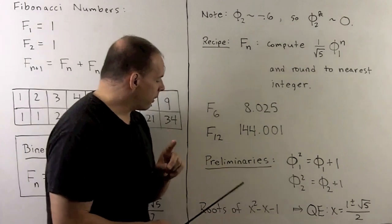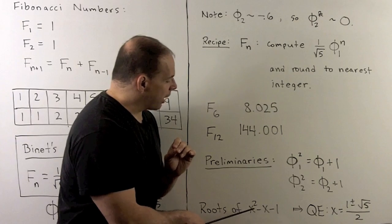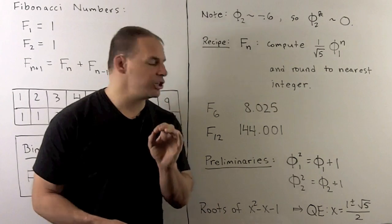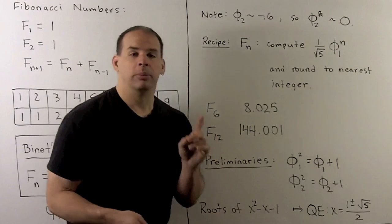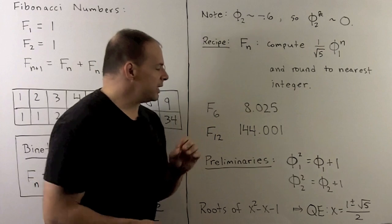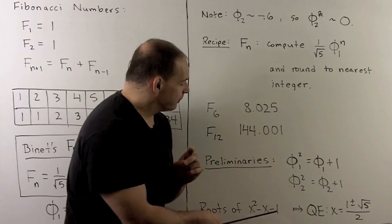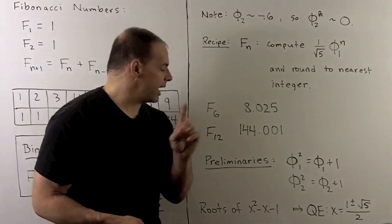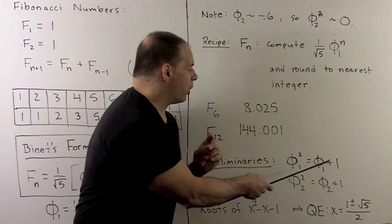Now, where does this come from? So, you'll note, if I take the polynomial x squared minus x minus 1, if I apply the quadratic equation, we get x equal to 1 plus or minus square root of 5 over 2, which means that phi 1 and phi 2 are going to be roots of this equation. So, that would say, for instance, phi 1 squared minus phi 1 minus 1 is equal to 0, or phi 1 squared equals phi 1 plus 1.